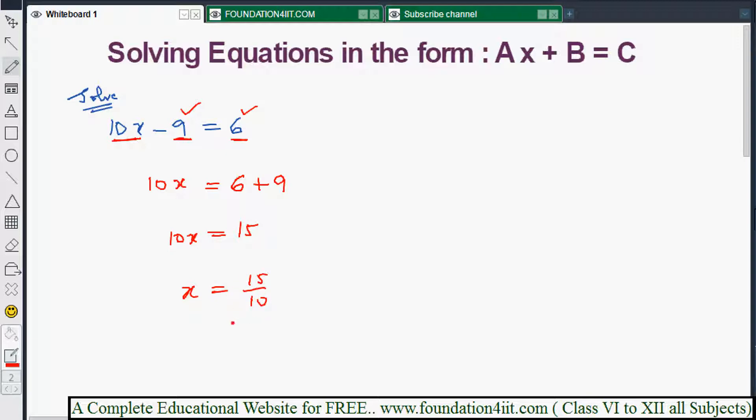x is 10 times x, so that is 15 divided by 10. Multiply becomes division when you take it to the right side. Simplify to get 3 by 2, so x equals 3/2. You can solve in this way. Let's take one more example.